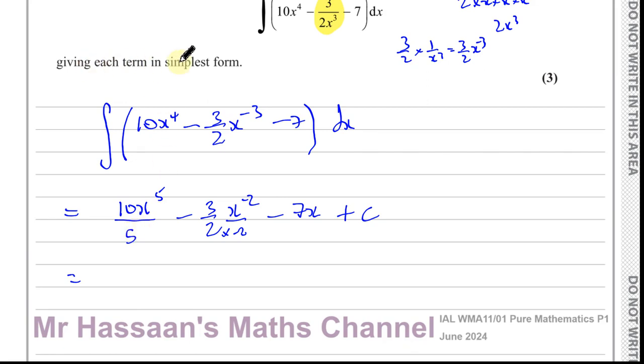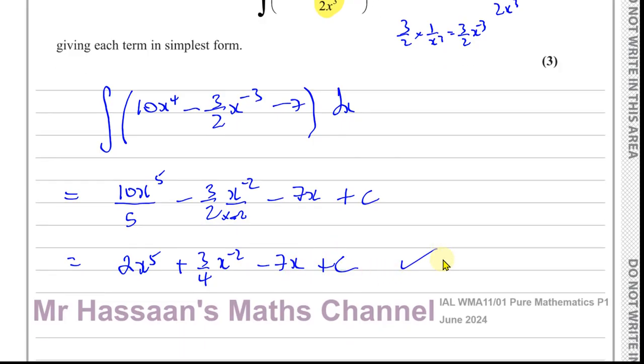Let's give each term a simplest form. 10 over 5 is 2, so 2x to the power of 5. This is going to give you minus 3 over 4, so it's going to be plus 3 over 4. We have minus times a minus down here, it gives you plus. 3 over 4x to the power of negative 2, minus 7x plus C. That's fine as your final answer.